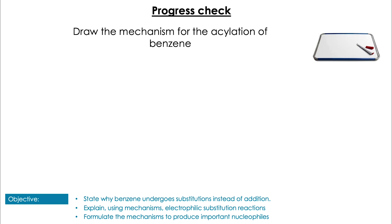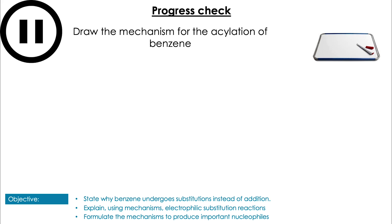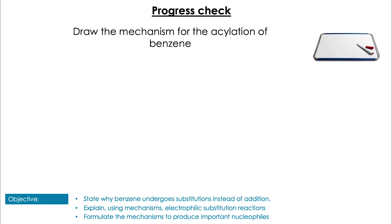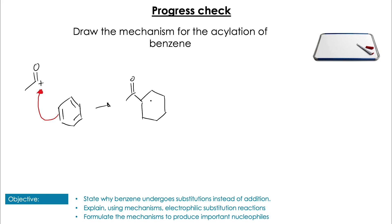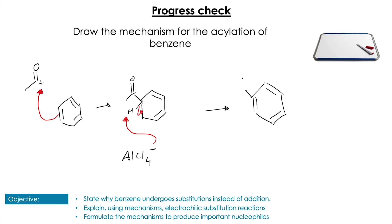Last question: draw the mechanism for the acylation of benzene. Hopefully you're becoming a little bit bored of drawing these mechanisms for the electrophilic substitution with benzene. Here we will have, once again, the attack of the double bond on the electrophile, which will form our intermediate. The intermediate then has the hydrogen bonded to the carbon next to the substituent group we've just added removed by the attacking AlCl4-. Its electrons will go down, complete the ring, and complete the substitution, giving us our products AlCl3 and HCl.